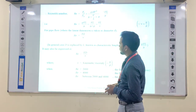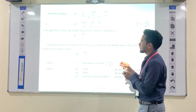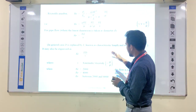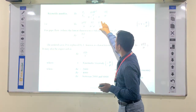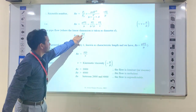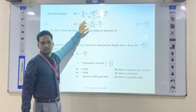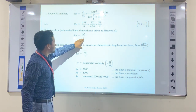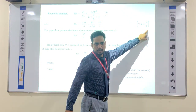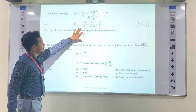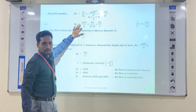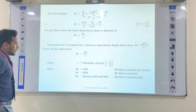For pipe flow the characteristic length is D, so the formula becomes Reynolds number = VD/ν, where ν is the kinematic viscosity. Kinematic viscosity ν is the ratio of dynamic viscosity to the density of the fluid. This is the final form of Reynolds number in terms of kinematic viscosity, and ρVD/μ is the form in terms of dynamic viscosity.